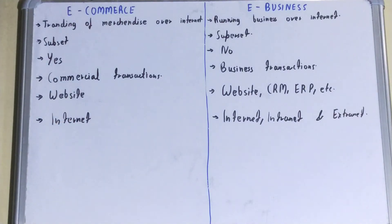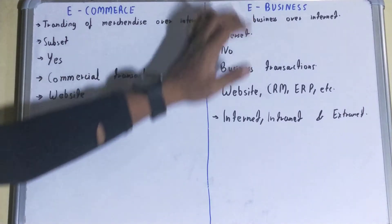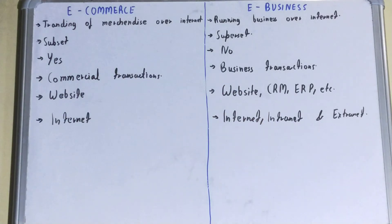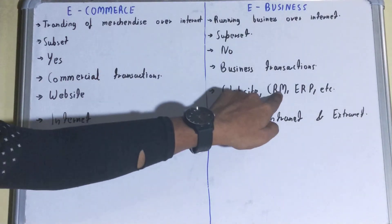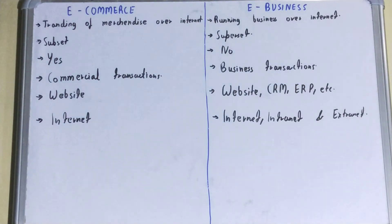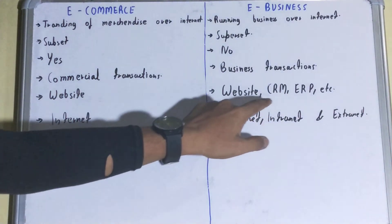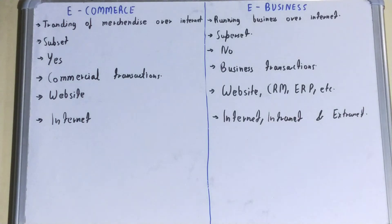In terms of requirements: for e-commerce, you only need a website where people can browse different products and place orders. But for e-business, you require different things — a website plus tools like CRM (Customer Relationship Management) and ERP, as well as different strategies for maintaining the business.